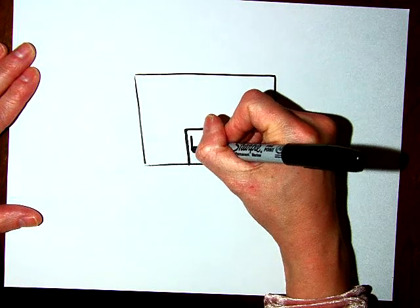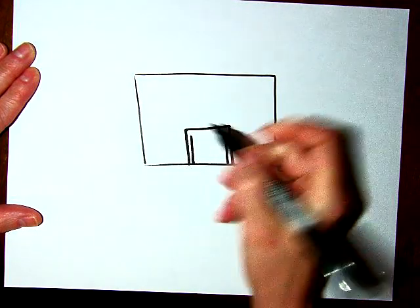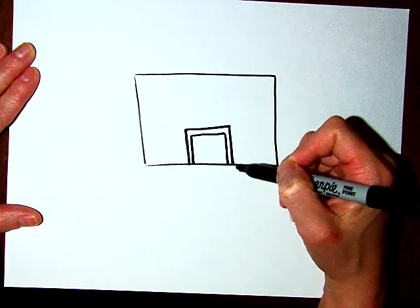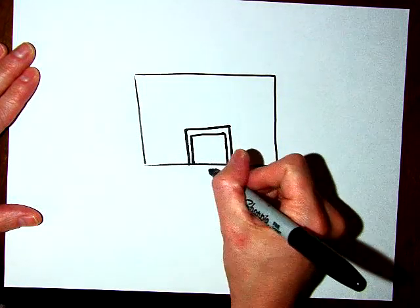Okay, and then we are going to give that some thickness, so just right inside that, go straight up, straight across. Sometimes that line is orange, so we could go back later and paint that red or orange, not paint, probably color or markers.